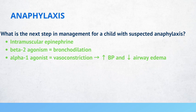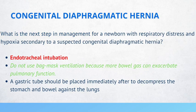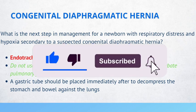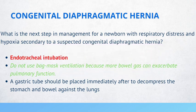What is the next step in management for a newborn with respiratory distress and hypoxia secondary to a suspected congenital diaphragmatic hernia? Endotracheal intubation. It's very important that you do not use bag-mask ventilation, because more bowel gas can exacerbate pulmonary function. A gastric tube should be placed immediately after to decompress the stomach and bowel against the lungs.